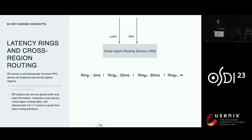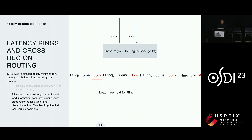To address this, SR uses its cross-region routing service, which we refer to as XRS. XRS periodically collects per-service global traffic and load information — basically RPS information and CPU utilization — aggregated per region. It uses that information to compute a per-service cross-region routing table, which is then disseminated to all L7 routers through the RIB. This computation also depends on the locality rings, now expanded to include load thresholds. Intuitively, when Ring 1's load is above 55%, XRS will loosen its latency restriction and start routing traffic to Ring 2, and so on. This is an iterative algorithm that terminates when no region is overloaded or all are equally loaded.